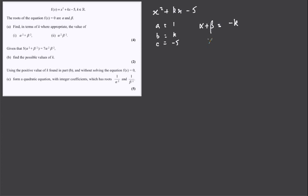and the product of the roots, alpha beta, equals c over a, minus 5 over 1.